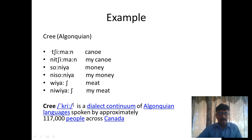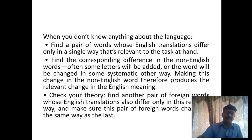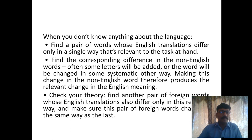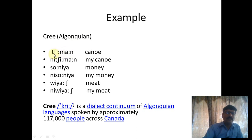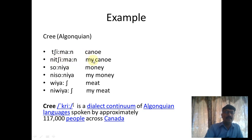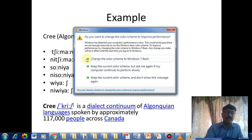This is how words are analyzed morphologically — this is morphological analysis. When you don't know anything about the language, the approach is to find a pair of words whose English translations differ only in a single relevant way. For example, 'Chi Maan' means canoe and 'Ni Chi Maan' means 'my canoe,' so 'Ni' tells us it means 'my.'